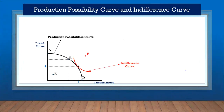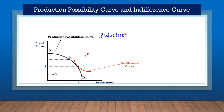We can also understand inefficiency by looking at the production possibility curve, the PPC. The PPC is the black curve that is concave down, and we can also look at the indifference curve. Every point on the production possibility curve is productively efficient. Point A, point B, point C, and point D are all on the PPC, so they are all productively efficient.